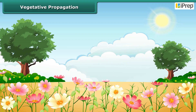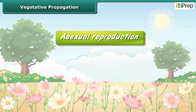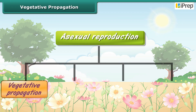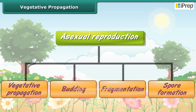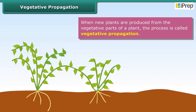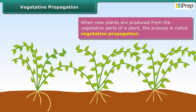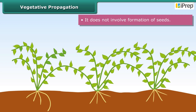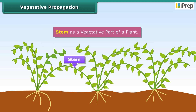Different methods of asexual reproduction are vegetative propagation, budding, fragmentation, and spore formation. When new plants are produced from the vegetative parts of a plant, the process is called vegetative propagation. It does not involve the formation of seeds.